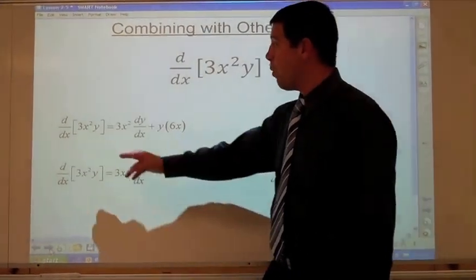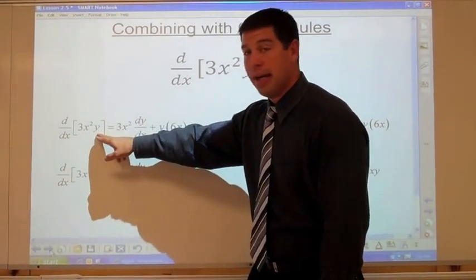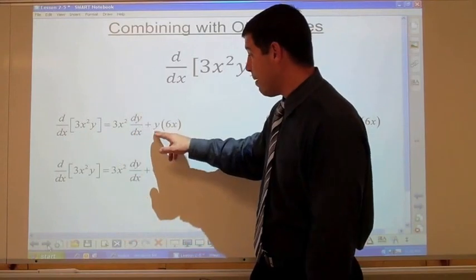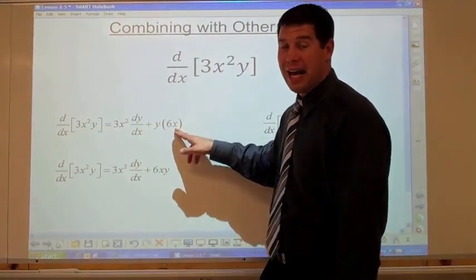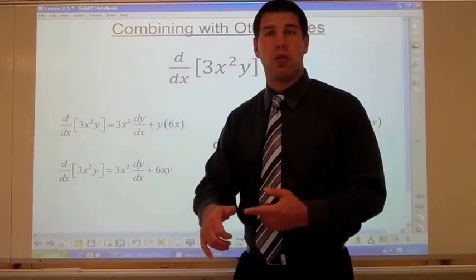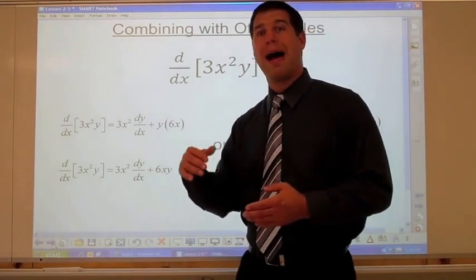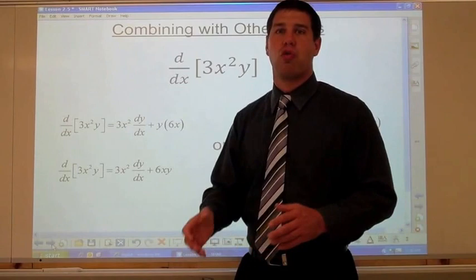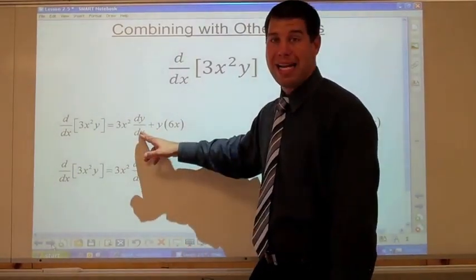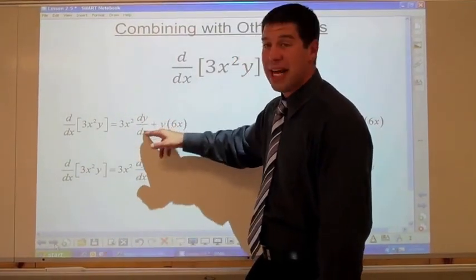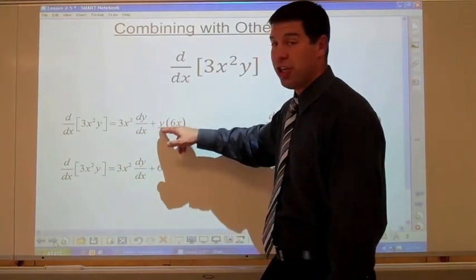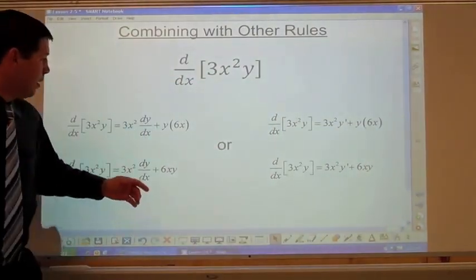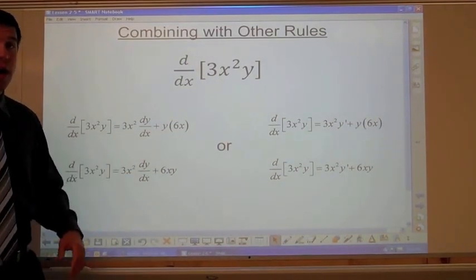We do first — 3x squared — times derivative of the second, which is dy/dx (since derivative of y is 1, it's 3x squared times dy/dx). Plus second — which is y — times derivative of the first, which is 6x. When it's just the second term in the product rule and it's a y, it's not being derived, so there's no dy/dx. It's only when you're deriving a y term that you include dy/dx.